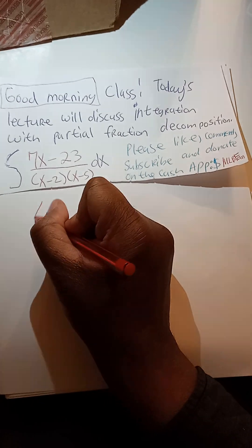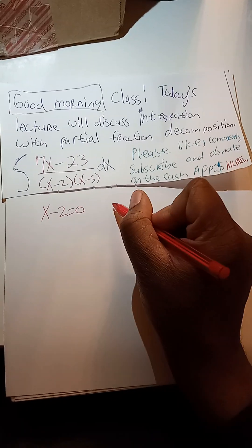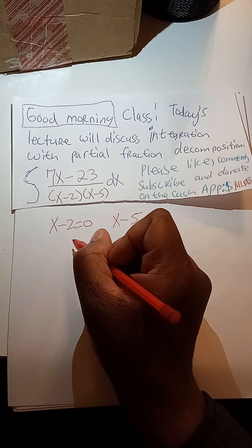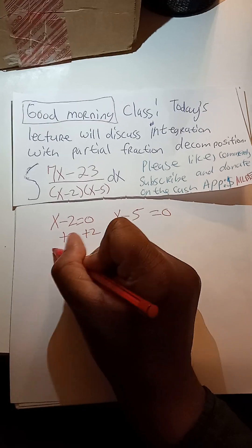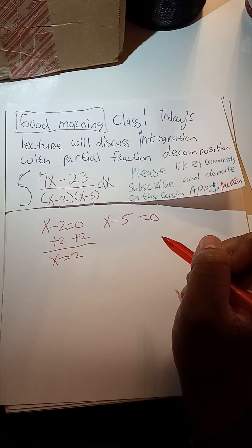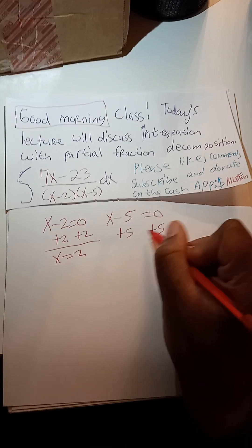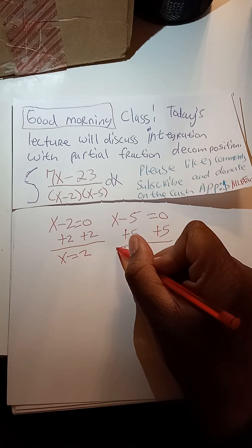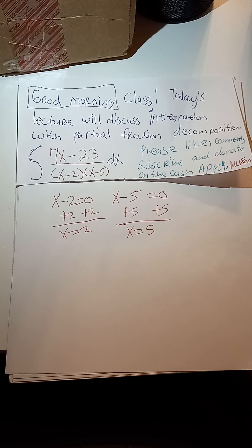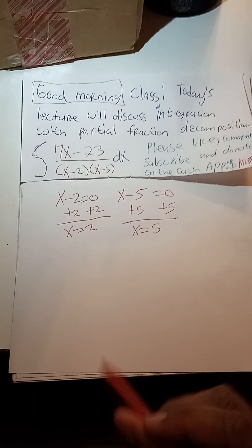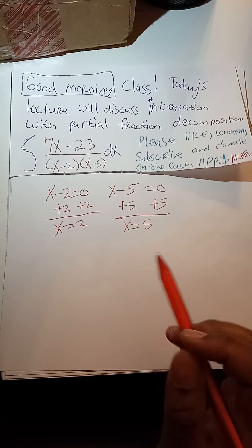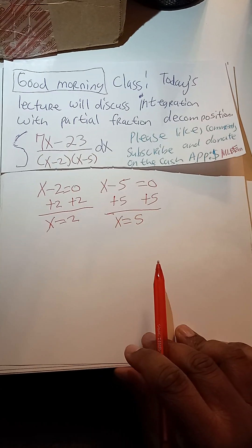So x minus 2 is equal to 0, and x minus 5 is equal to 0. With the first equation, we add 2 to both sides, and x is equal to 2. For x minus 5 equals 0, we add 5 to both sides, and x is equal to 5. So the two restrictions — where the zeros cause the denominator to be 0, and you can't divide by 0 — are x equals 2 and x equals 5.